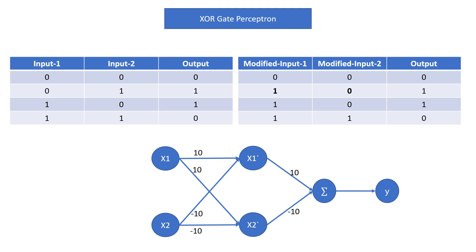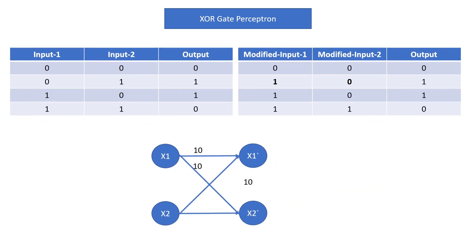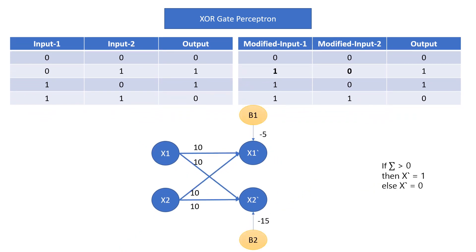Put the weighted connections for the modified inputs that we have already calculated — 10 and minus 10. I am going to assume weights as 10, 10 and minus 10, minus 10. Pause the video and calculate the activation function condition for x1-dash and x2-dash. This is not going to work as-is because whatever the condition is, it will not convert (0,0) to (0,0), (0,1) to (1,0), (1,0) to (1,0), and (1,1) to (1,1). What we actually need is to keep three inputs as they are and invert only one input.